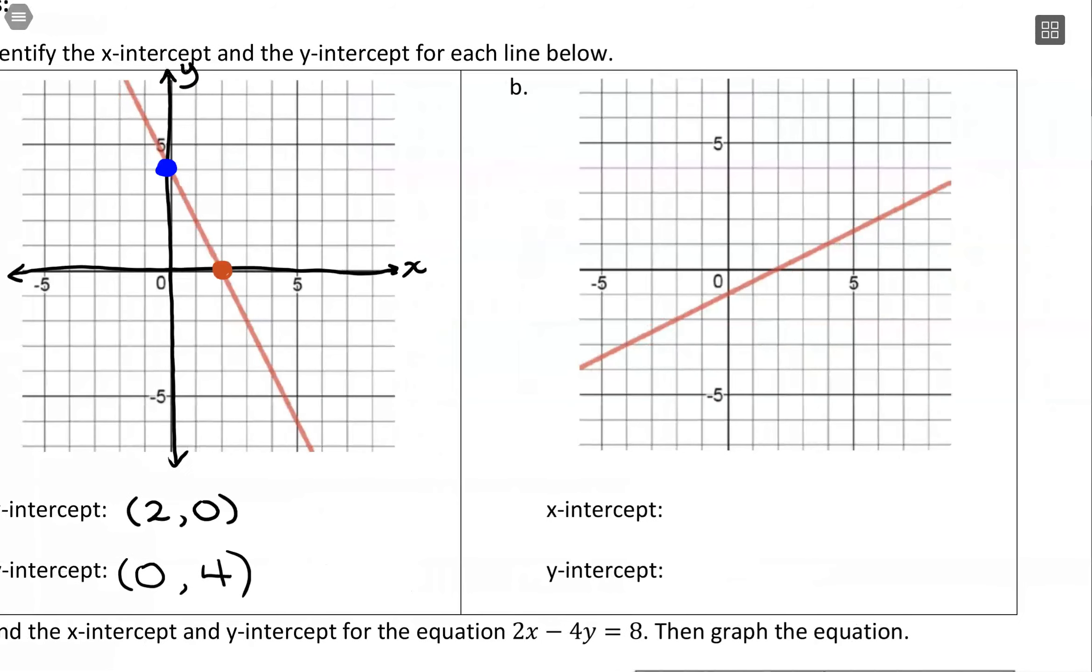Alright, for this next example, the y-intercept would be down here, and the x-intercept is where we're crossing the x-axis. So for the x-intercept, we move to the right 2, so we'd have a positive 2, and then 0 for y. For the y-intercept, we have nothing for x, but for y we have a negative 1. So that's visually how we can see the x and y-intercepts from a graph.